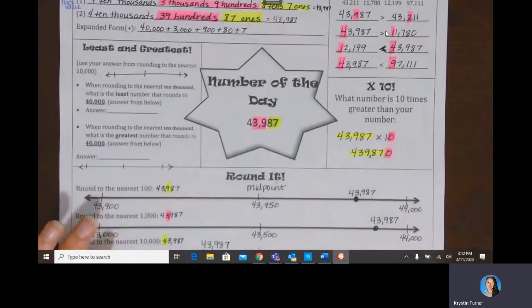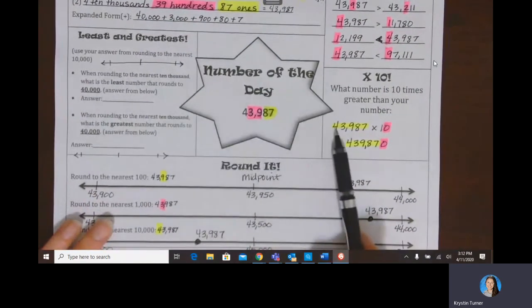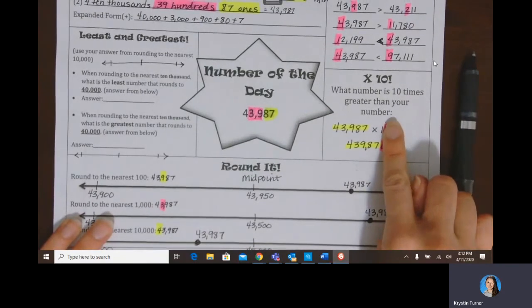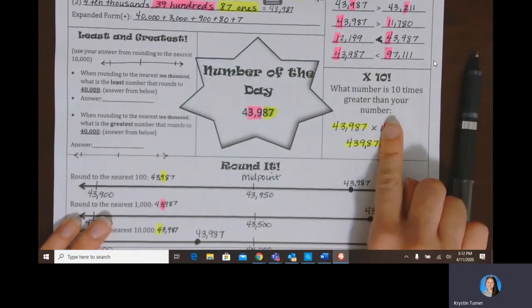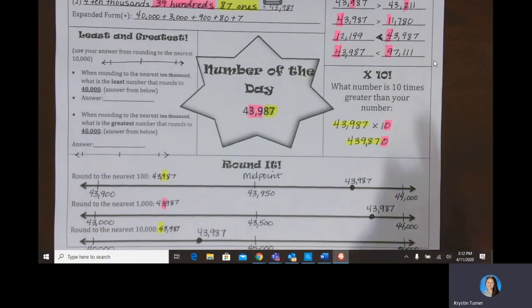If we remember our multiplying times 10 strategy is to take our digits, think of those as multiplying times 1. So that's 43,987 times 1 is 43,987. And then adding that zero on the end for 439,870.